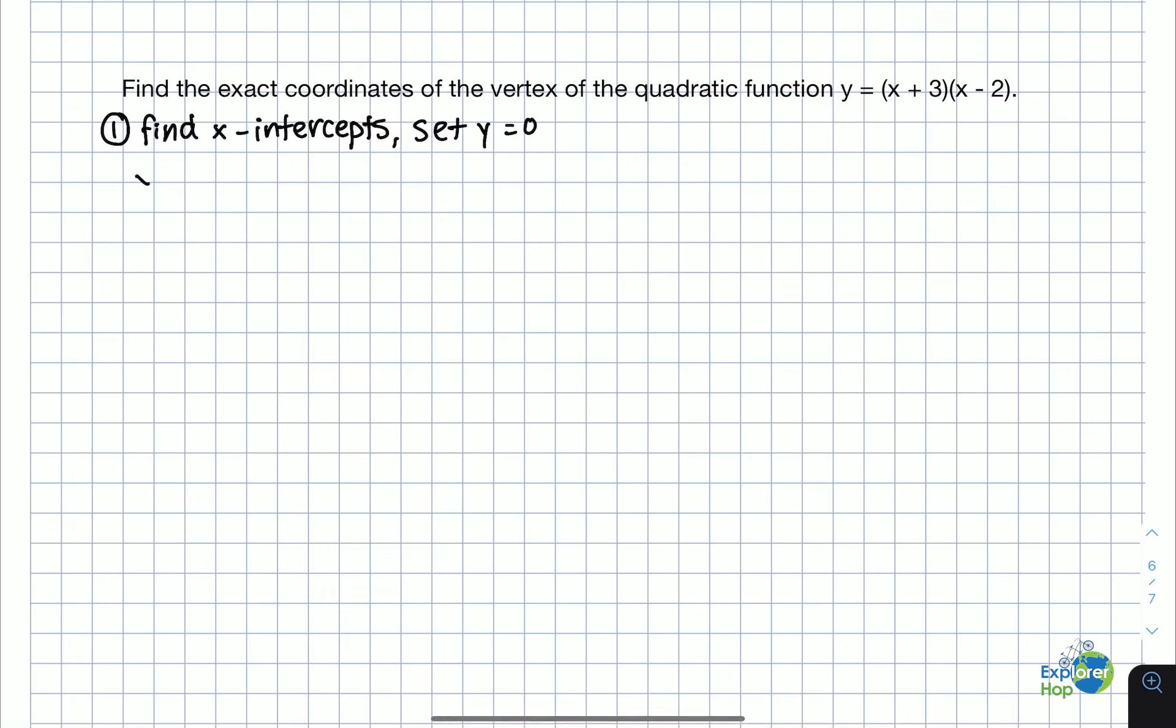So the equation we have is y equals x plus 3 times x minus 2. So let's find the two intercepts. 0 equals x plus 3, and 0 equals x minus 2.